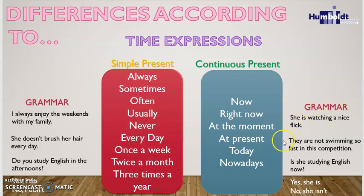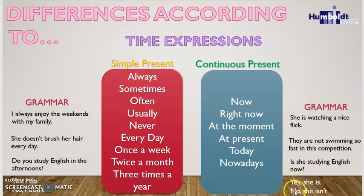The negative example is: 'They are not swimming so fast in this competition' — 'Ellos no están nadando muy rápido en esta competencia.' Note that we don't use any auxiliary to create a negative sentence; we only add 'not' after the verb 'to be.' For a question: 'Is she studying English now?' — '¿Está ella estudiando inglés ahora?' Short answers: 'Yes, she is' or 'No, she isn't.'